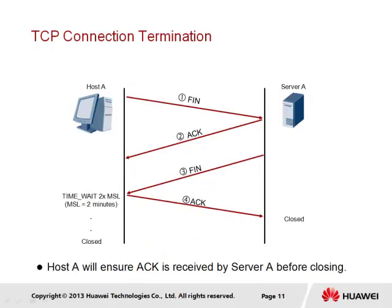The termination of a TCP connection, after data transmission between the two end stations is complete, relies on the FIN code bit. Host A will notify Server A that the connection is no longer needed by sending a TCP segment containing the FIN code bit, which Server A will acknowledge. Server A will then generate its own TCP segment containing the FIN bit, which is acknowledged by Host A. Host A will then wait for a period equal to two times the maximum segment lifetime (MSL) timer before the TCP connection is closed.